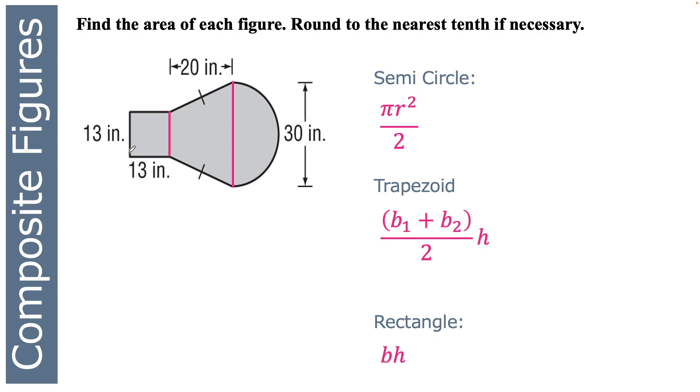Here we go. The semicircle. Let's see, what do we think the radius of the semicircle? If this whole thing is 30, then the radius would be just half of that. So that radius is going to be 15. So π times 15 squared divided by 2, 225π divided by 2. We'll just leave it like that for a sec.